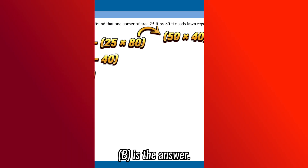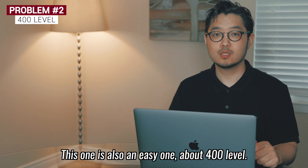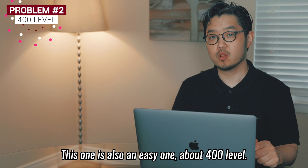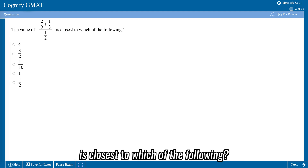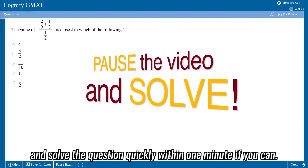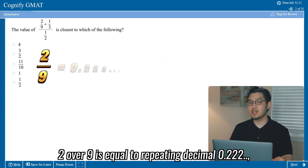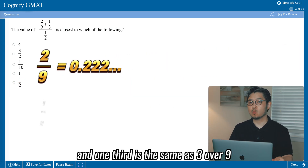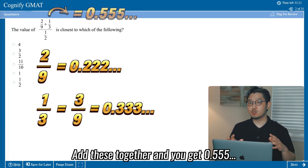This second question involves using the properties of number 9. This one is also an easy one, about the 411 level. The value of (2 over 9 plus 1 third) divided by half — which of the following is it close to? Pause the video and solve the question quickly within 1 minute if you can. 2 over 9 is equal to the repeating decimal 0.222, and 1 third is the same as 3 over 9, which is equal to 0.333. Add these together and you get 0.555.